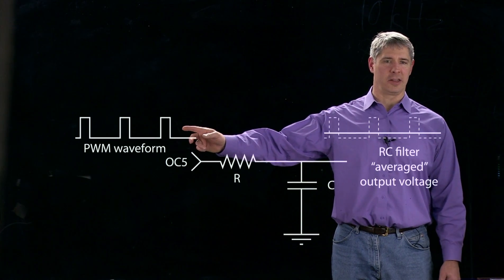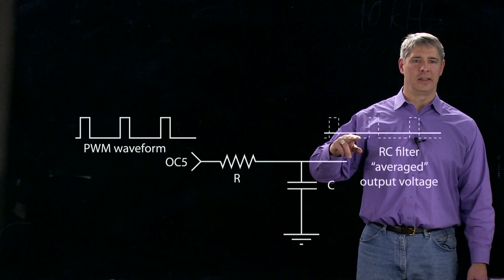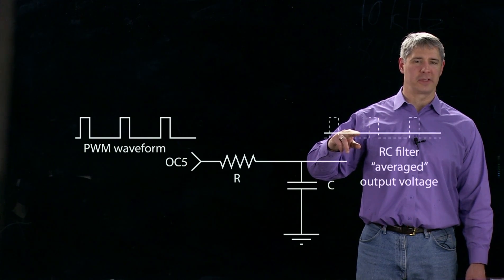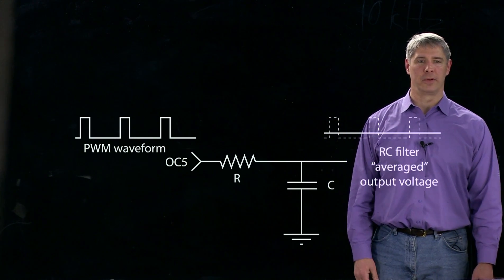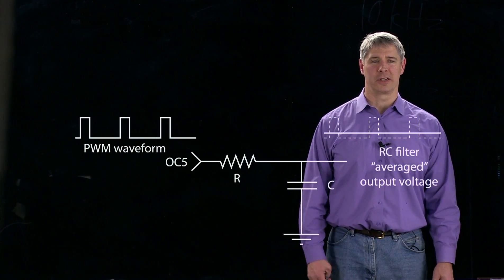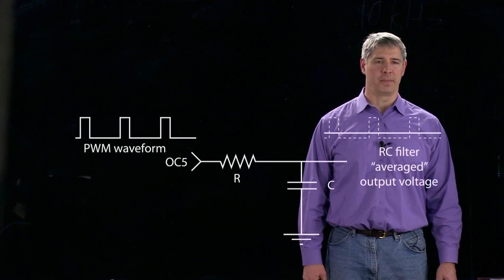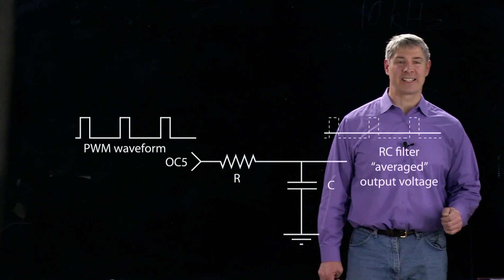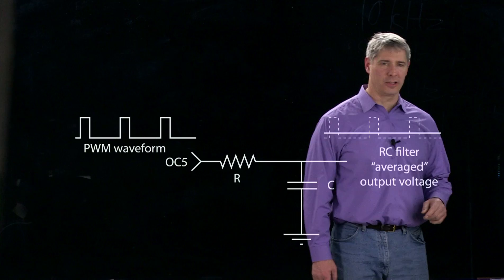So for here, for example, if the duty cycle is, say, 33%, then the value here is about 33% of the maximum value of 3.3 volts. So the RC filter is a way to approximately time average the output from the output compare, but it's not doing exactly an averaging. So let's take a closer look.